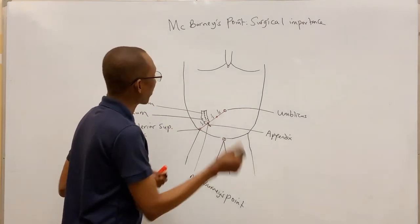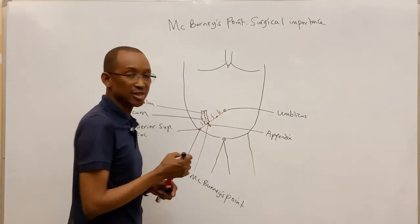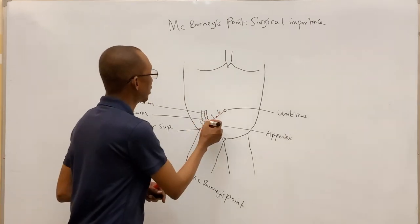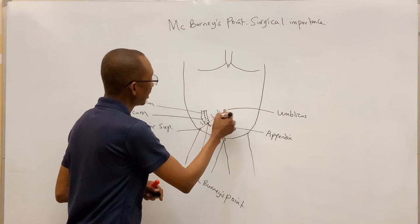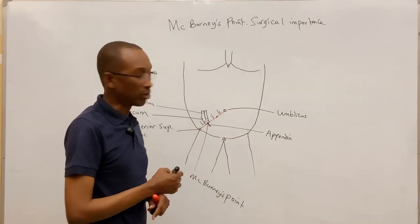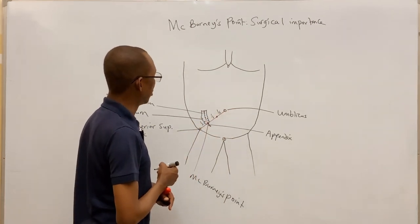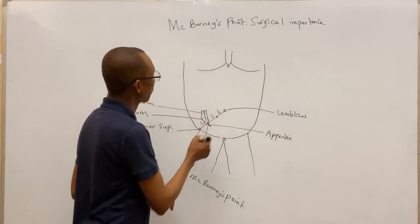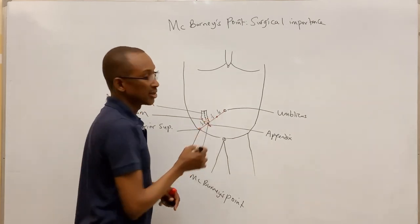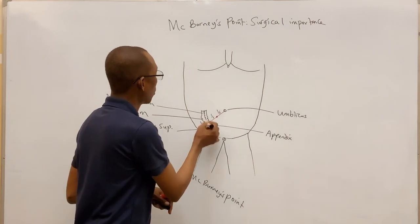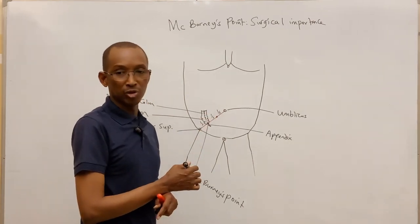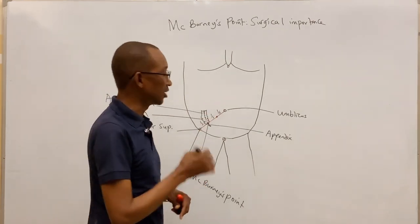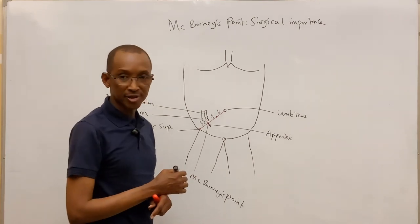So the position of appendix is at that junction of the middle two-thirds of this line and the lateral one-third of this imaginary line. So that point, the surgeons can utilize it to expose an appendix when somebody has this appendicitis. That is the inflammation of the appendix itself.